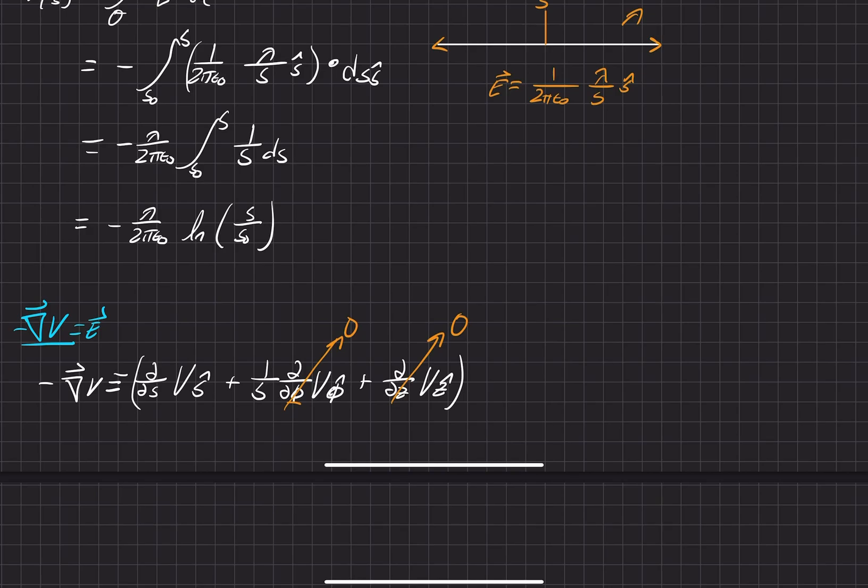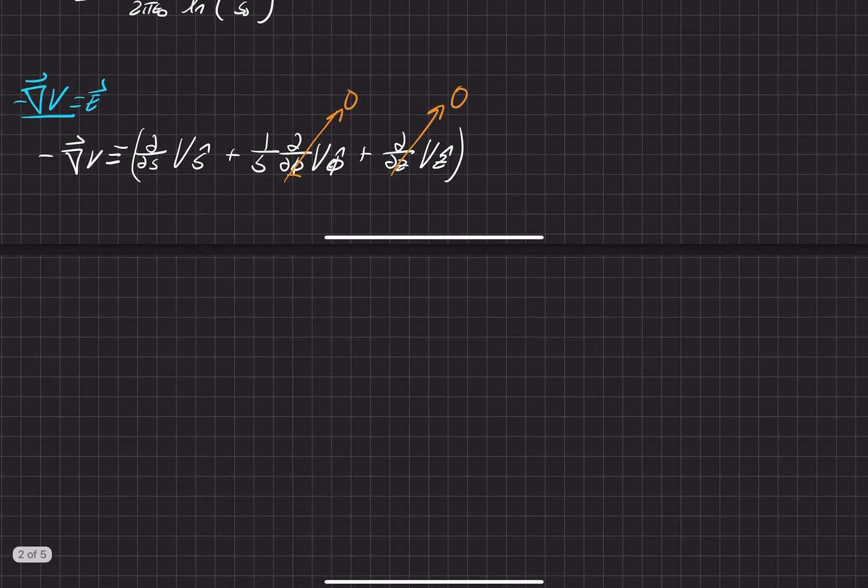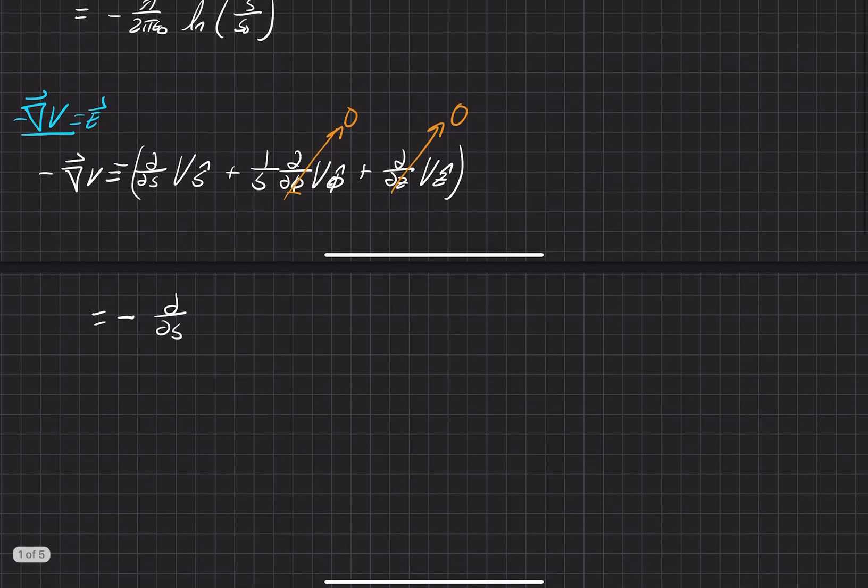And all that is left is the negative gradient of our electric potential for that value right there. So we'll go ahead and evaluate that negative partial in respect to S of lambda over 2 pi epsilon naught. This is our potential that we just found. And it was negative, so we can just do the plus sign out here. And then we'll go ahead, so this partial moves past these constants and just attacks that.